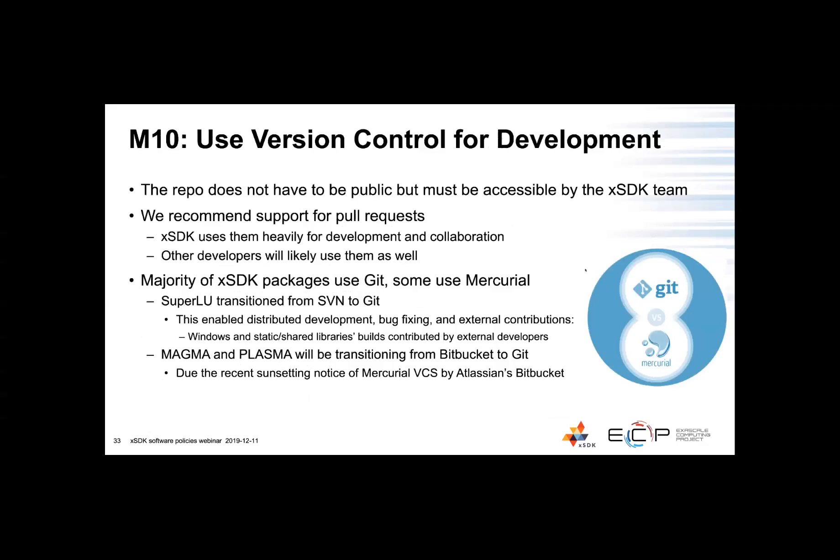Moving on to policy number ten, which asks for the use of version control for development. We do not require that the repository is public, but at least would like to have access for XSDK team members. We recommend that the repository or site supports pull requests because it's a very easy way to support fast development and collaboration between teams. The majority of XSDK packages now use Git; some use Mercurial. Upon joining XSDK, SuperLU transitioned from SVN to Git, which allowed them to take pull requests, use distributed development, and enable builds on Windows with static or dynamic libraries.